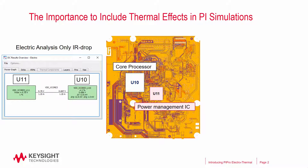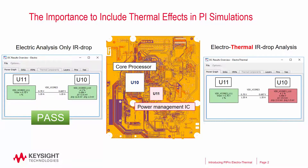If I perform an electric-only analysis on this power net, I would find the IR drop to be within the tolerance and the power net passes the margin test. However, after I include the thermal effects in my analysis, I would find the same power net failing the same margin test. As a result, to know the true margin of the power distribution network, I really have to include thermal effects in my analysis.